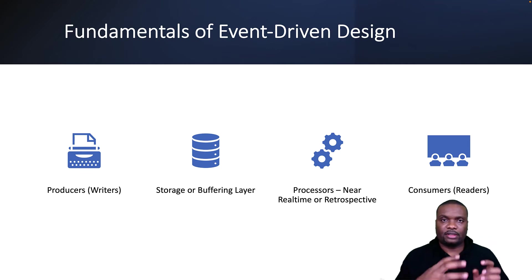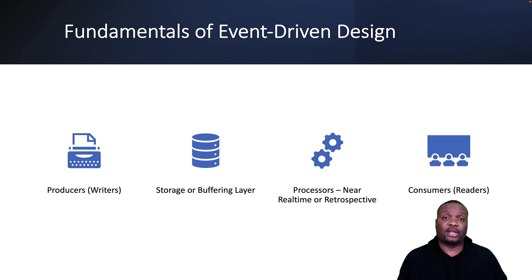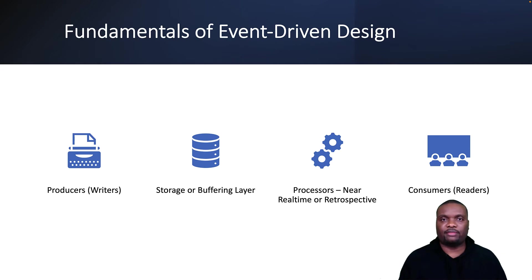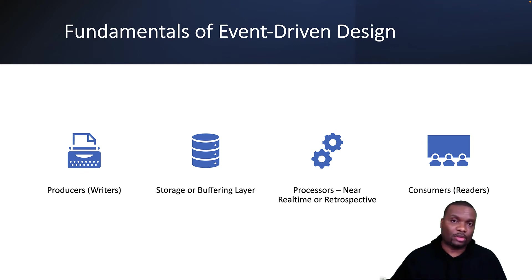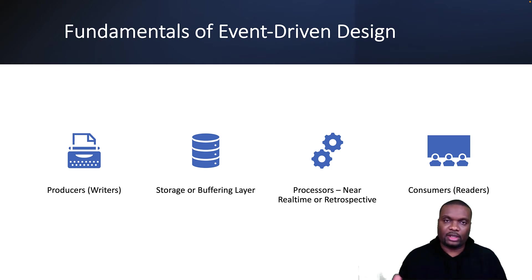To summarize: you have producers generating events that are stored in a buffering mechanism like Apache Kafka. Then we can use Kafka Streams, KSQL DB, Apache Flink, Apache Beam, or Apache Pulsar to handle these events in near real-time or after the fact. Then the consumers pick up the processed events and take it along from there. That's the fundamentals of event-driven architecture.